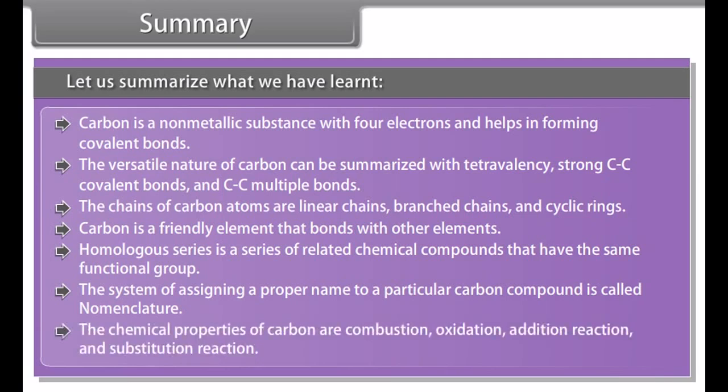Let us summarize what we have learned. Carbon is a non-metallic substance with four electrons and helps in forming covalent bonds. The versatile nature of carbon can be summarized with tetravalency, strong carbon-carbon covalent bonds, and carbon-carbon multiple bonds. The chains of carbon atoms are linear chains, branched chains and cyclic rings. Carbon is a friendly element that bonds with other elements. Homologous series is a series of related chemical compounds that have the same functional group. The system of assigning a proper name to a particular carbon compound is called nomenclature. The chemical properties of carbon are combustion, oxidation, addition reaction and substitution reaction.